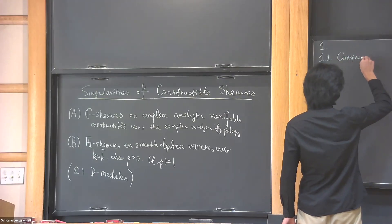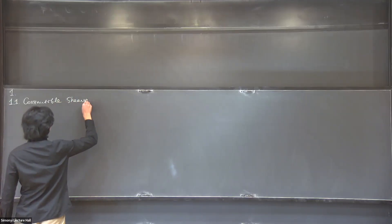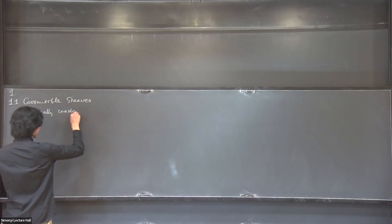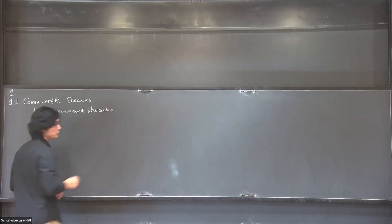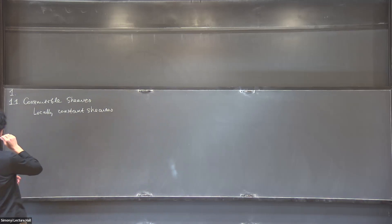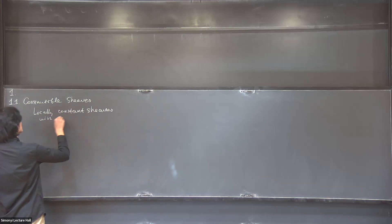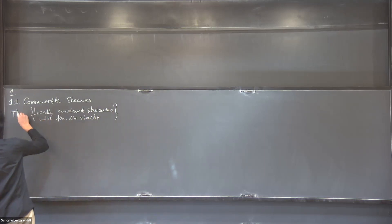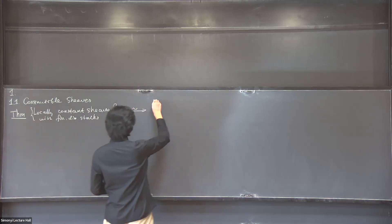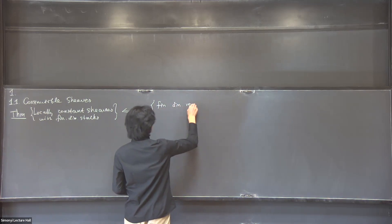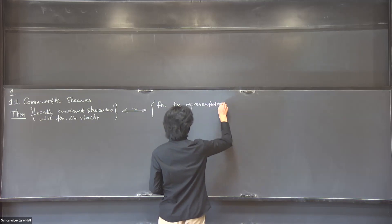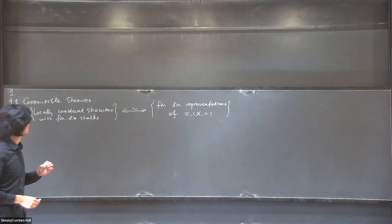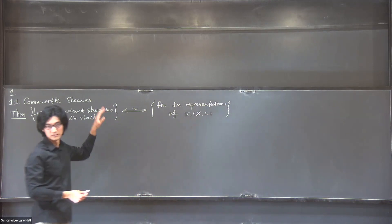What are constructible sheaves? You probably know what constant sheaves are. More complicated than constant sheaves are locally constant sheaves — sheaves which are locally constant. There is a remarkable description of locally constant sheaves with finite-dimensional stalks: this category is equivalent to the category of finite-dimensional representations of the fundamental group of your space. So if the fundamental group is complicated, this is a really complicated category.